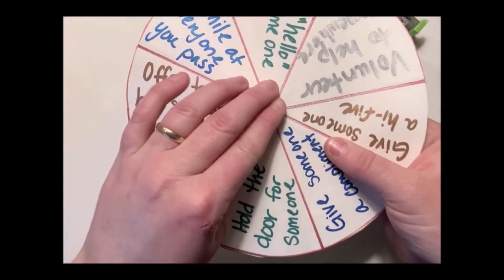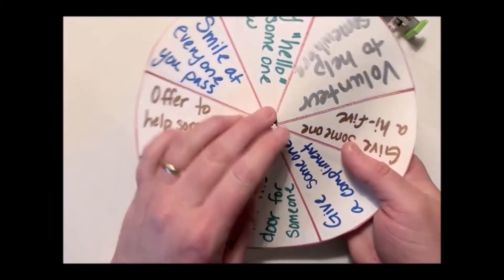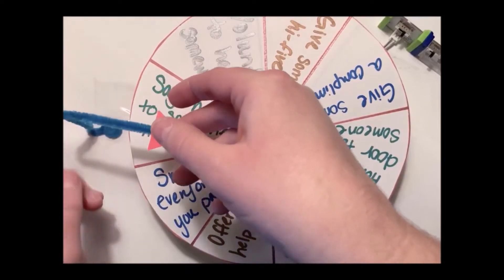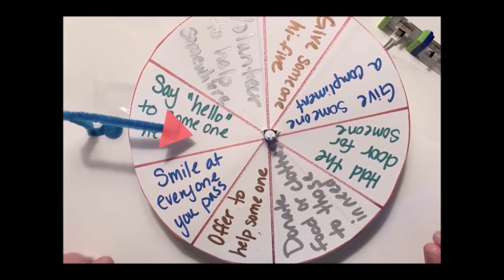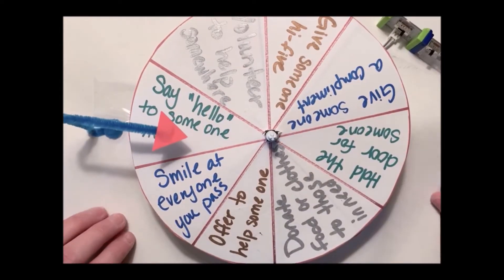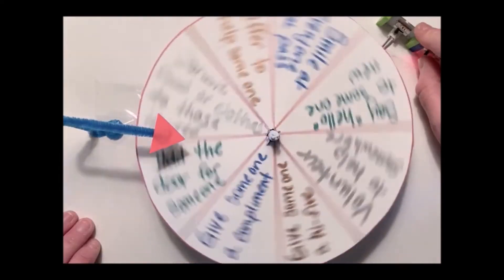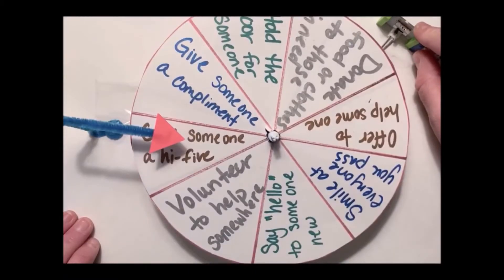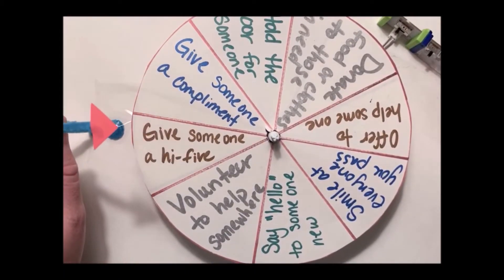So I put my pointer on here. Wherever it lands is the part of the wheel that the player will choose, and we landed on give someone a high-five.